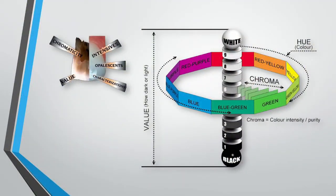It is chroma, and chroma is the intensity of the color. It is hue, which is the color. Hue is yellow, green, blue. Chroma is the intensity of this green or blue.